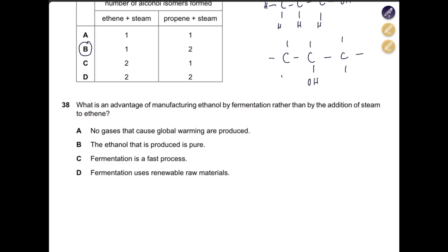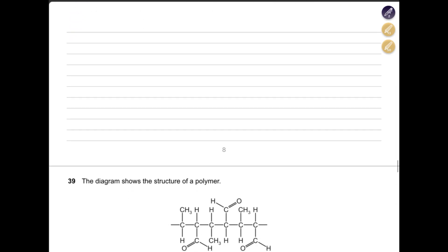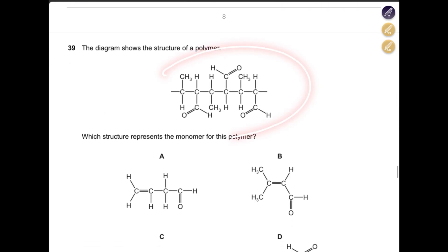What is the advantage of manufacturing ethanol by fermentation rather than by addition of steam to ethene? No gases that cause global warming are produced — wrong, fermentation also produces CO₂. The ethanol produced is pure — no, that applies to steam addition. Fermentation is a fast process — no, it is slow. Fermentation uses renewable raw materials — correct, it uses sugar cane. The answer is D.